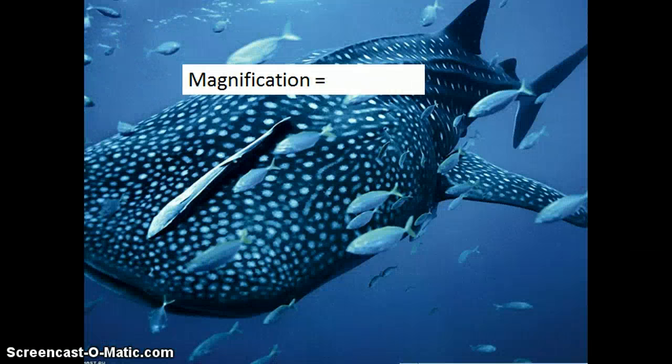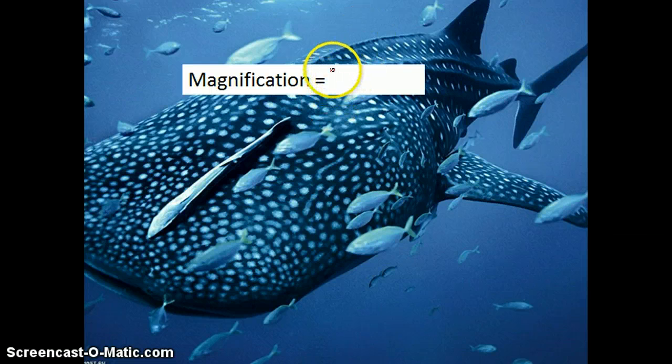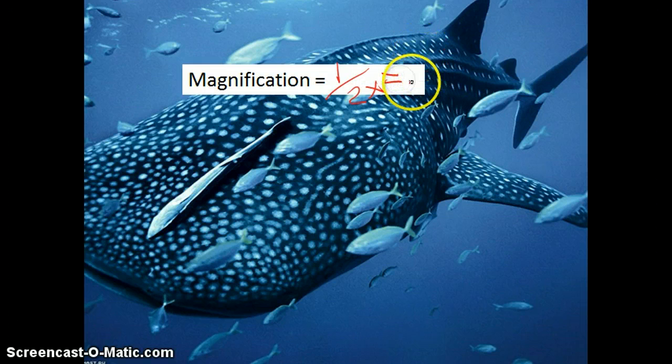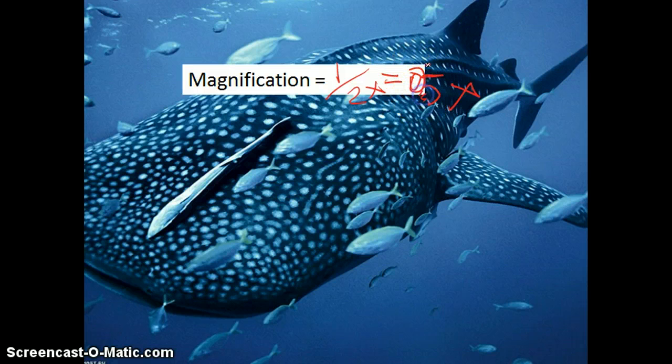So whenever I zoom out like that, I'm going to say that the magnification is 1 over whatever it is that I just zoom out with. So 1 over, I zoom out 2 times, so 1 over 2 times equals 0.5x. Notice that it's a decimal instead of a whole number.